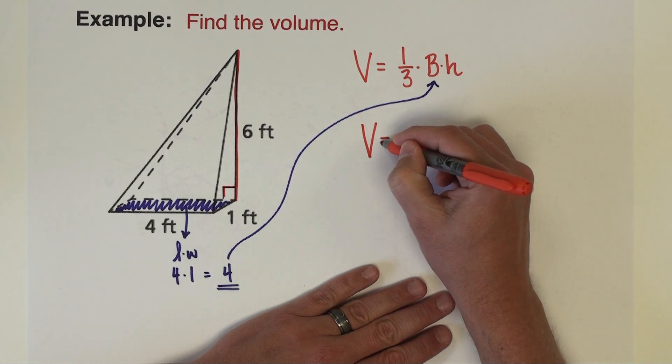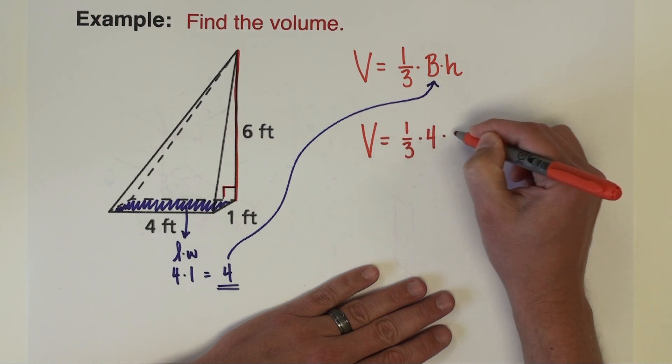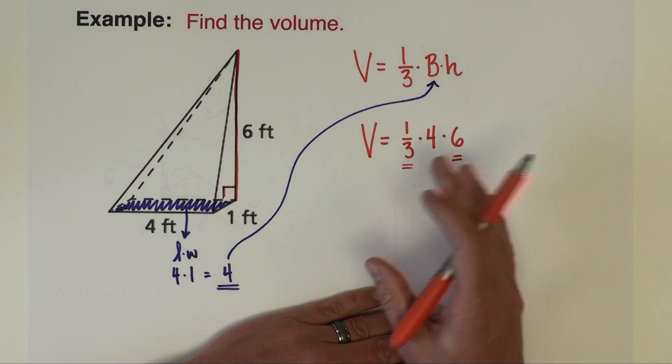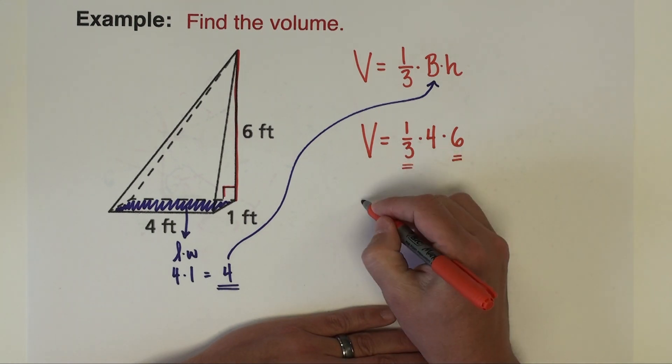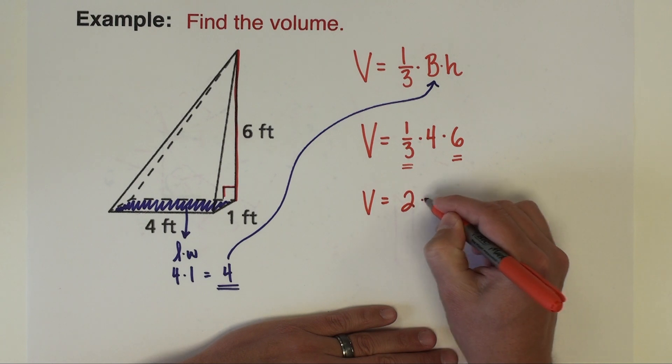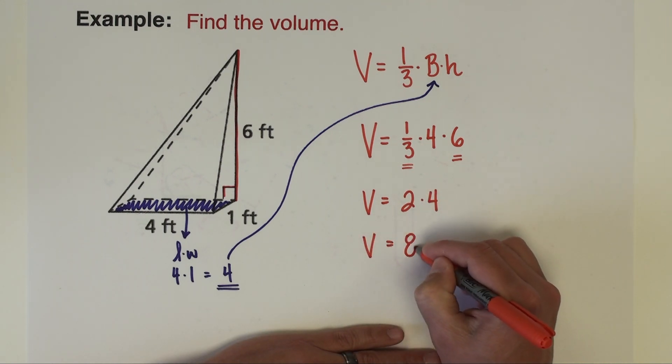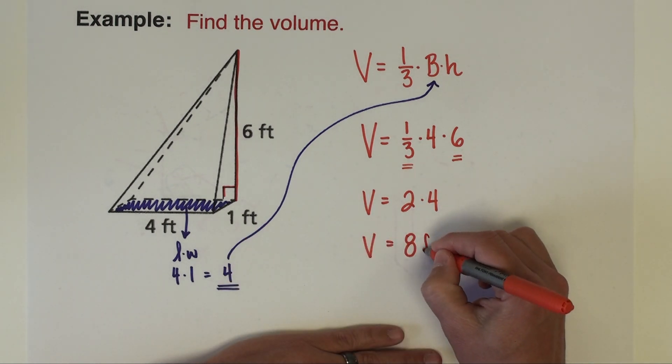Plug everything in. The volume is one-third times 4 times 6. Mental math here, I'm going to start with one-third times 6. I can do that order of that product any way I want and that's an easy way to start. One-third times 6 is 2. Two times the 4 is 8, and then we'll just put some units on there. Units are feet so we want feet cubed for volume.